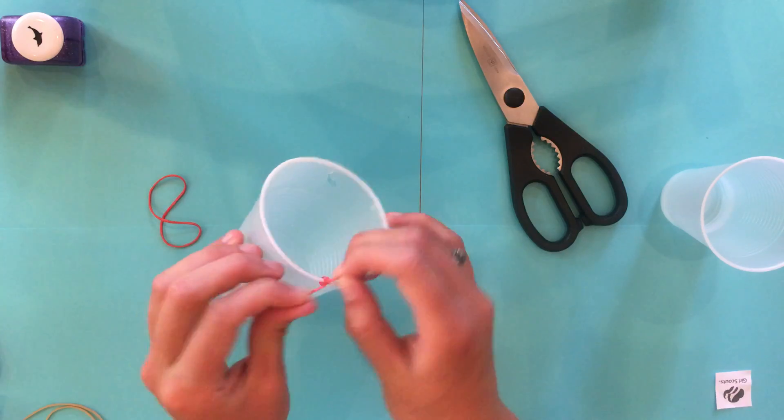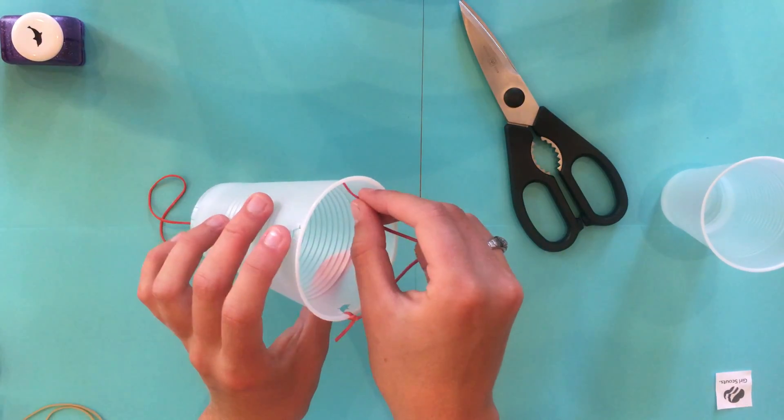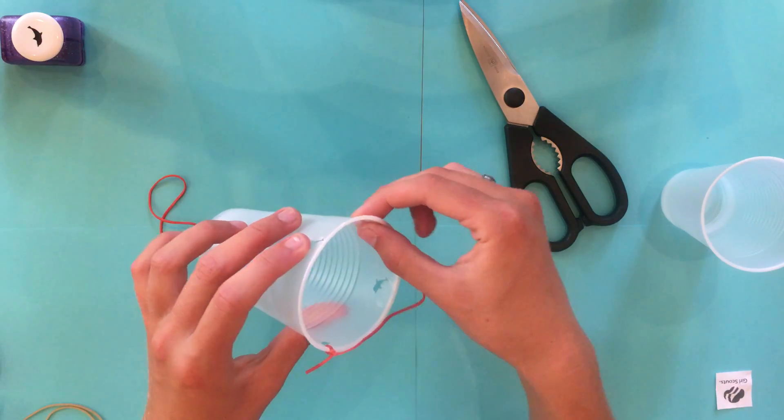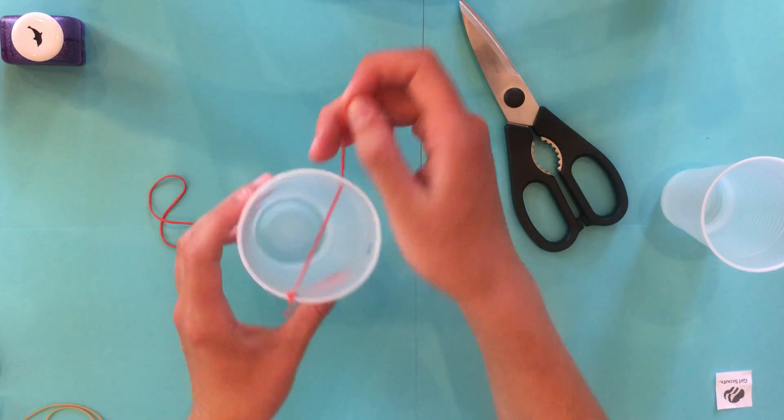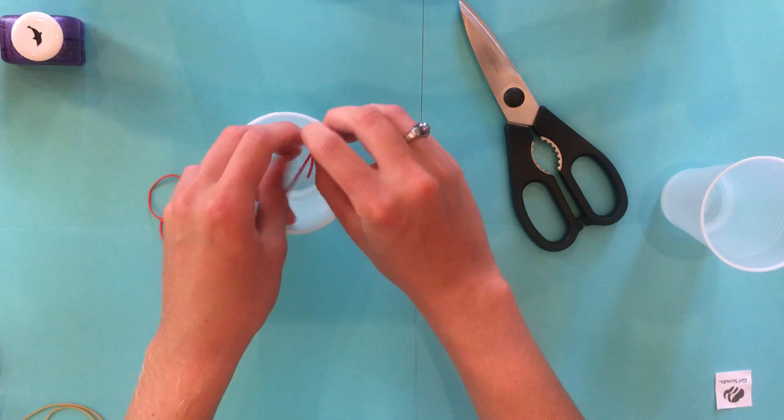After you've tied one in, you're just going to string it right across and pull it through that hole directly in front of the one that you just tied it to. And you're going to tie a double knot again.